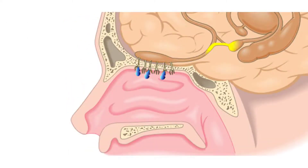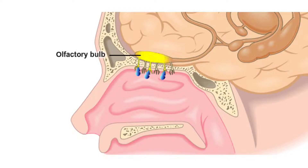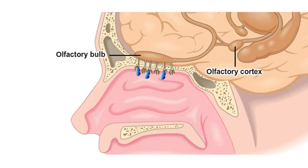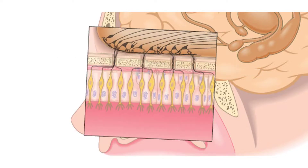Have you ever smelled something that brings back a memory? As with many sensory pathways, the olfactory bulb transmits the impulse to the olfactory cortex within the limbic system of the brain, which integrates it with emotions and memories.